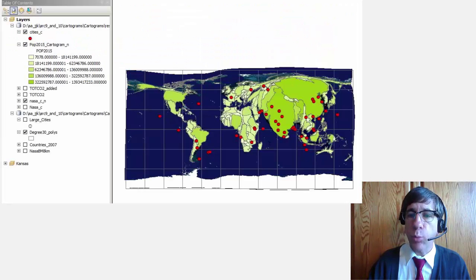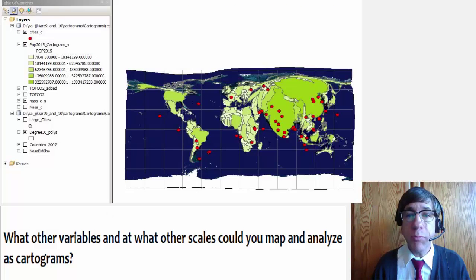What other variables and at what other scales could you map and analyze as cartograms? Thanks!